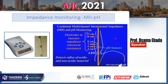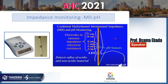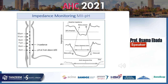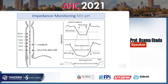Impedance refers to combined multichannel intraluminal impedance with pH monitoring. Electrodes are placed starting at 3 cm above the esophageal junction to measure resistance. The impedance detects both acid and non-acid material. When a bolus passes, the impedance tracing drops from baseline, and the amount of drop below pH 4 indicates the acid component.